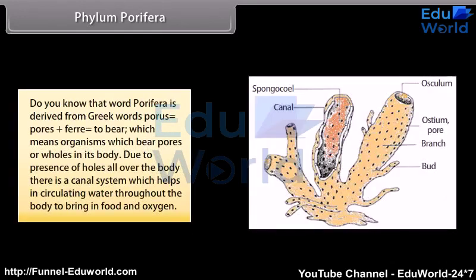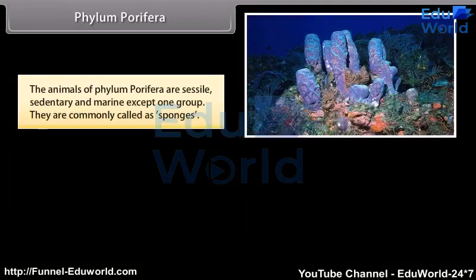Phylum Porifera. The word Porifera is derived from Greek words: porous, meaning pores, plus phere, meaning to bear — which means organisms which bear pores or holes in their body. Due to the presence of holes all over the body, there is a canal system which helps in circulating water throughout the body to bring in food and oxygen. The animals of phylum Porifera are sessile, sedentary, and marine, except one group. They are commonly called sponges.